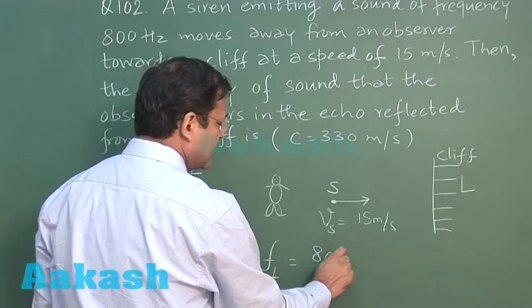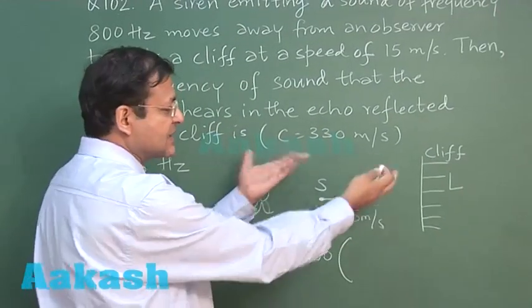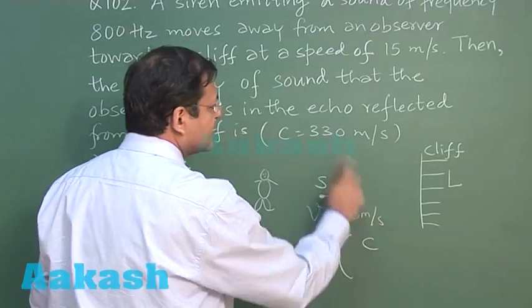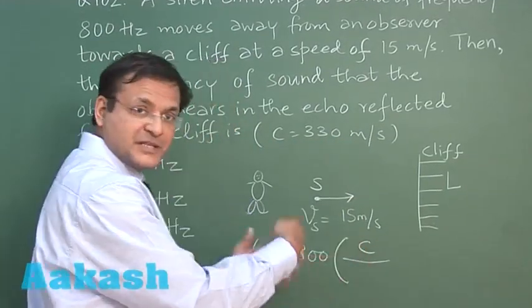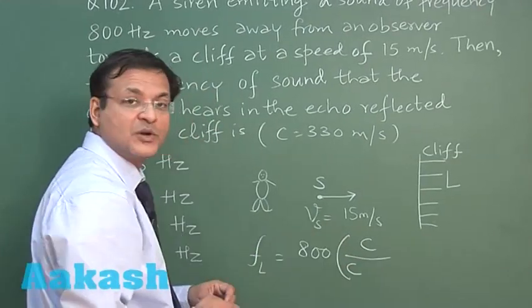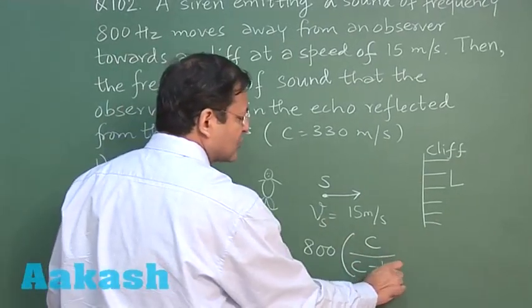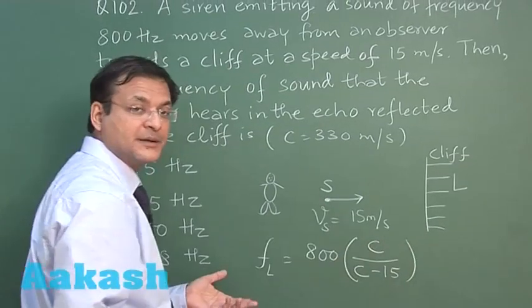So frequency heard by the listener is equal to frequency of the source, frequency of the source has been given as 800, into c plus velocity of listener, listener is stationary, c is given to you 330, upon c plus vl upon c plus vs. But instead of vs you are taking as minus 15 because source is moving towards the listener, isn't it.